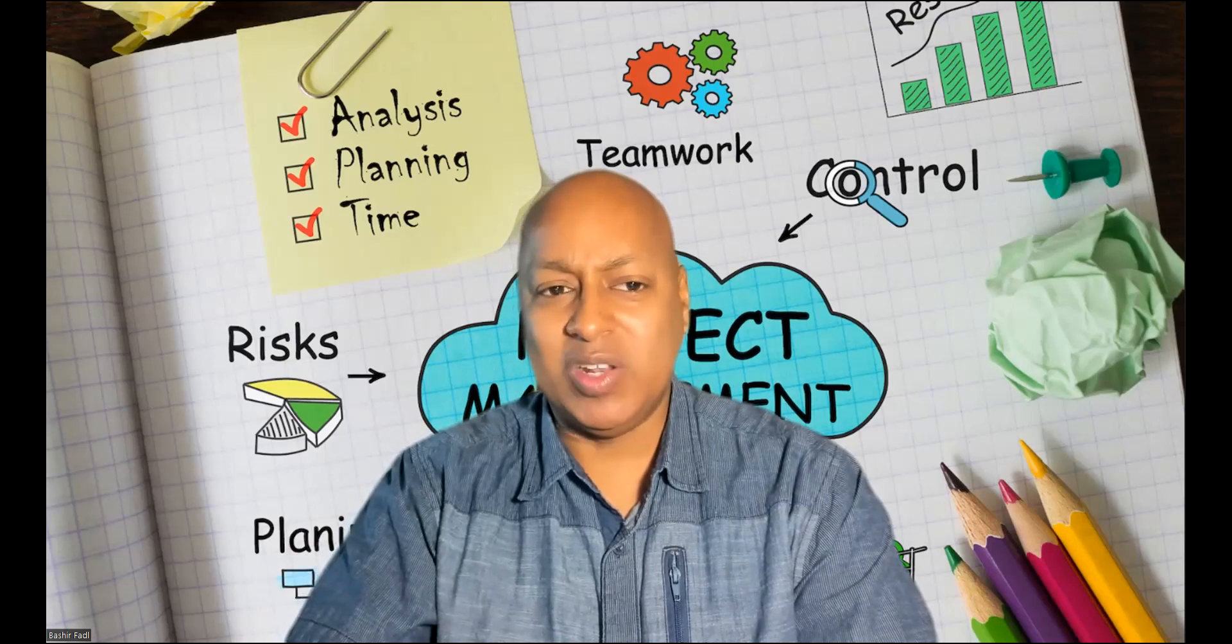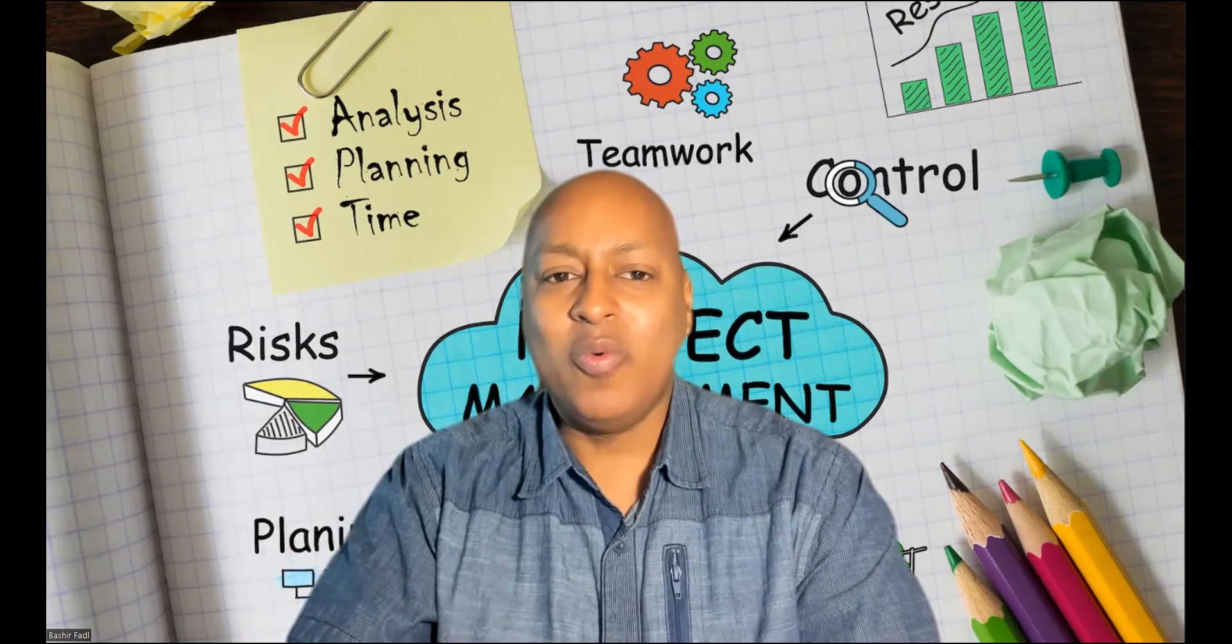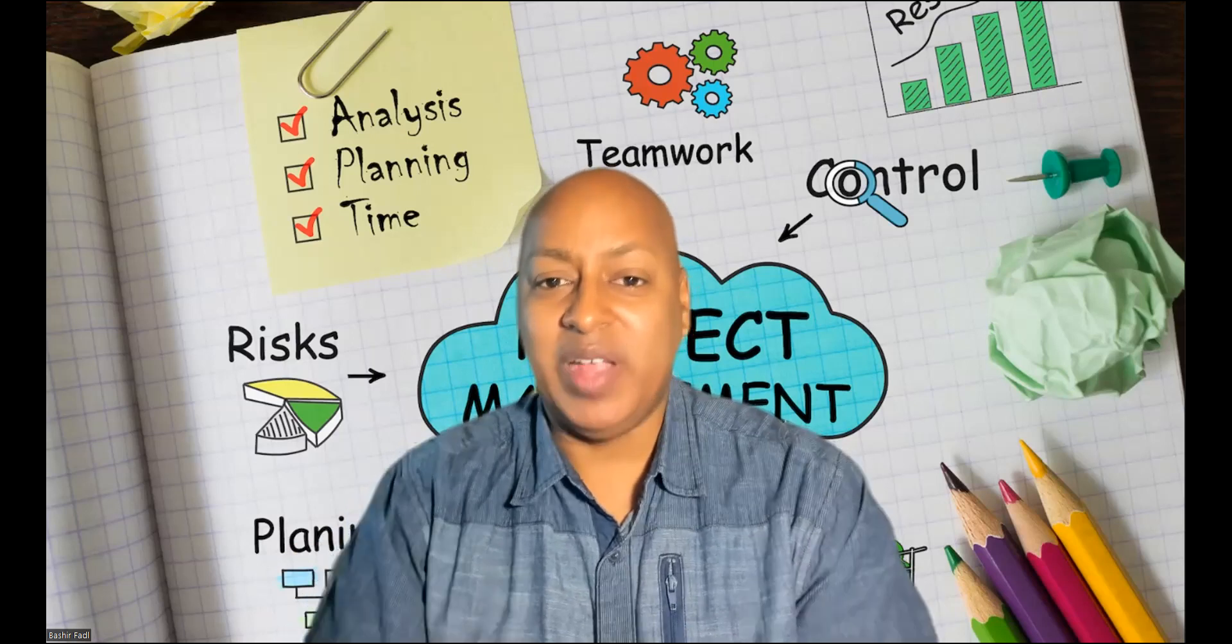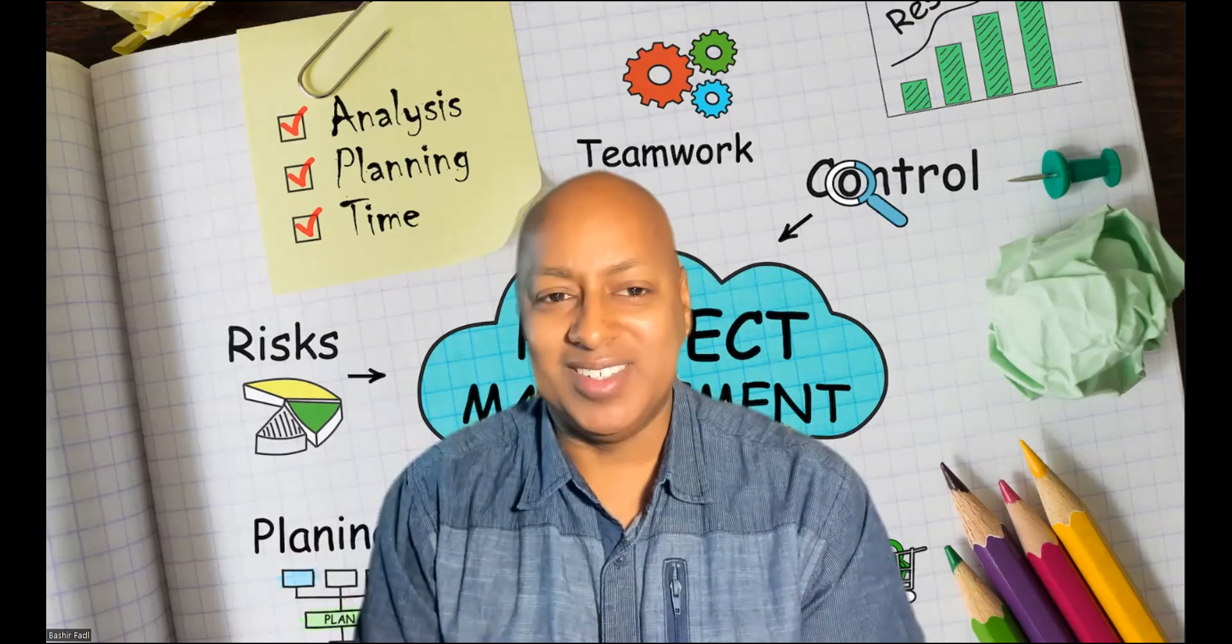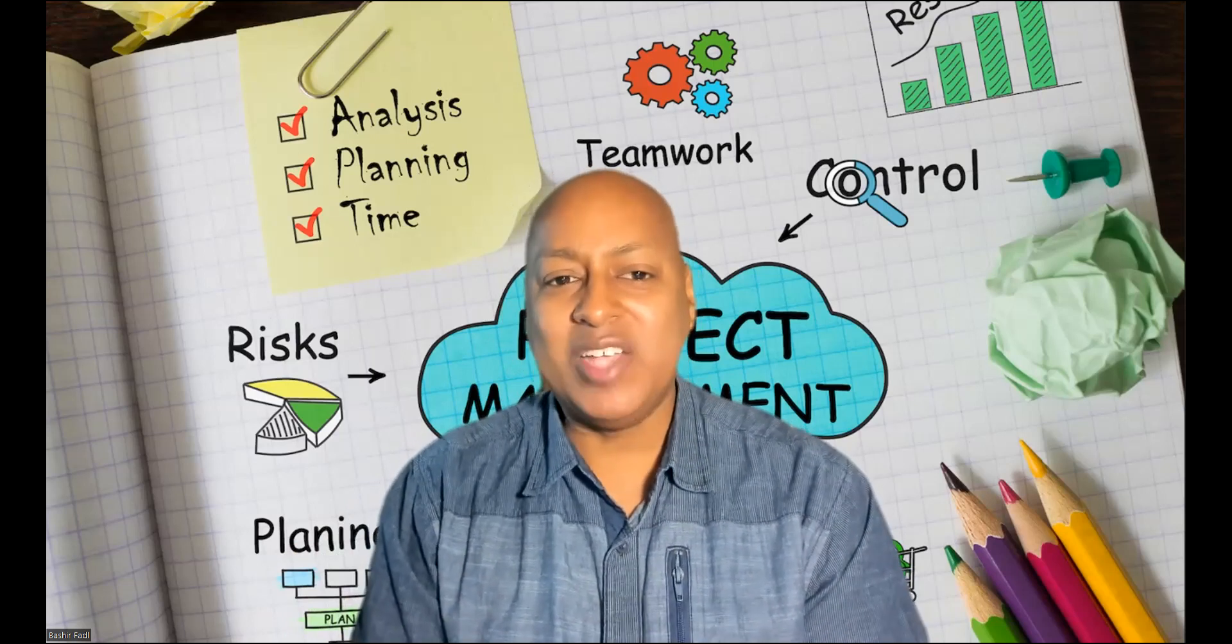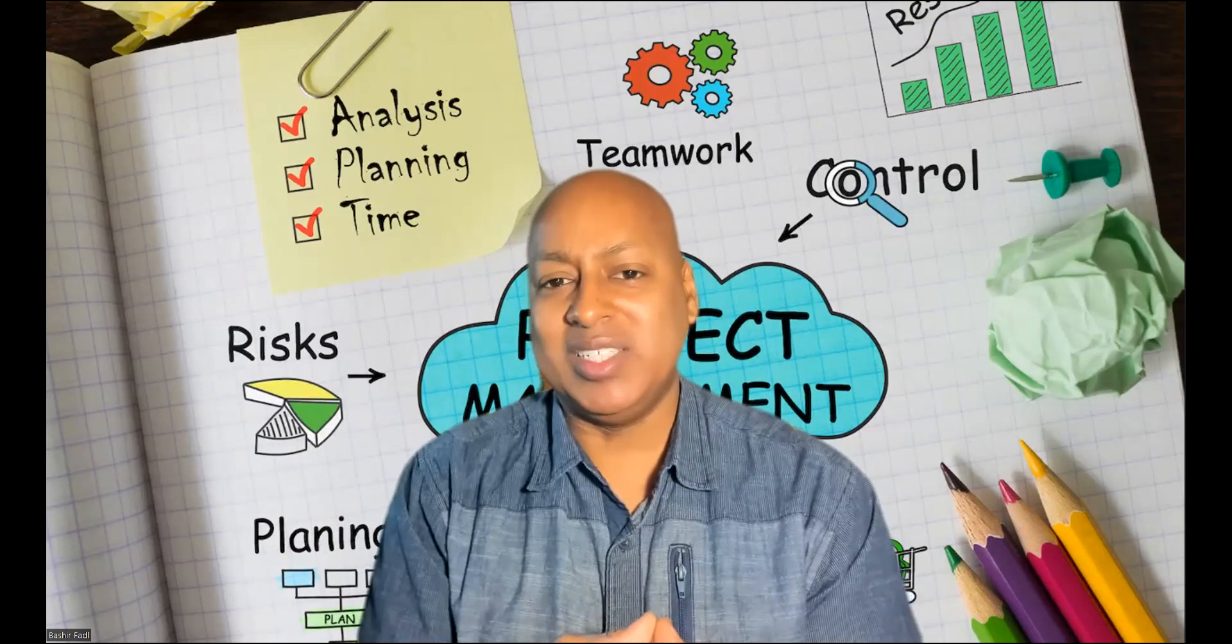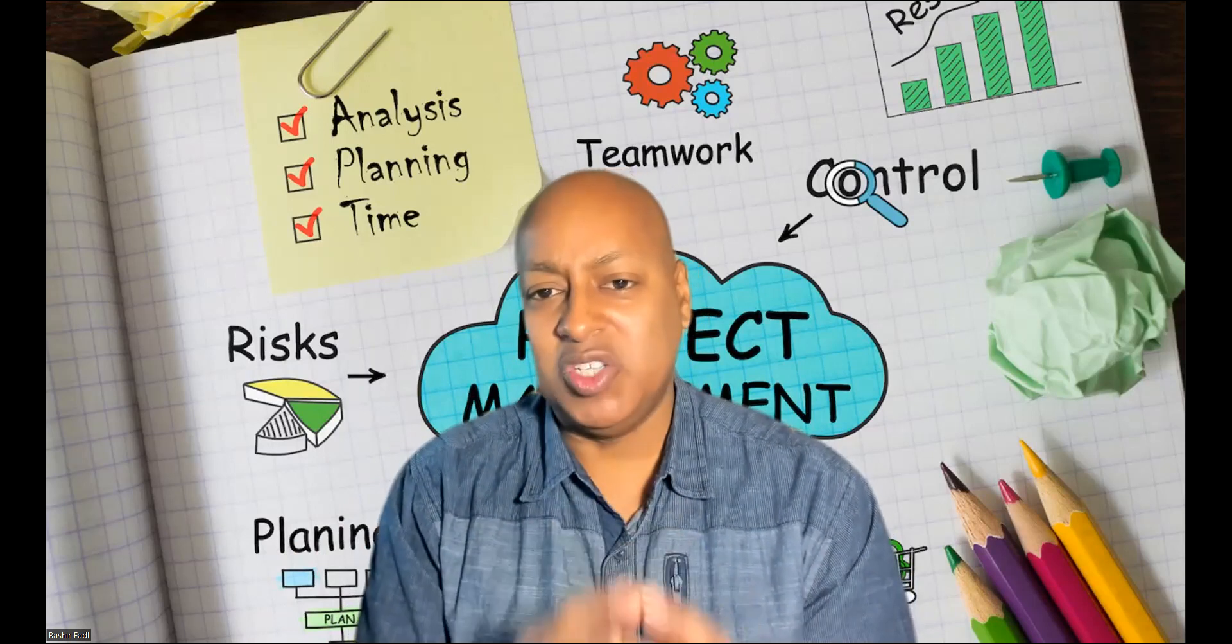So when we talk about strength, what are we talking about? We're talking about factors within the project or organization that are helpful to achieve our objectives. But then we have weaknesses. What are our weaknesses? They're factors or constraints of the project organization that are harmful to achieving the objective.